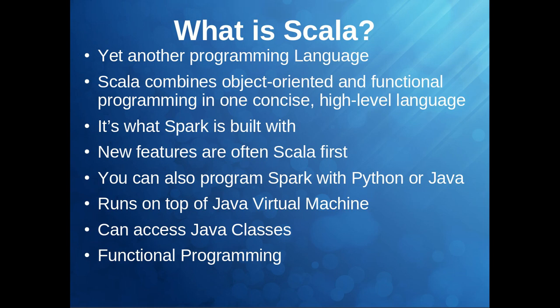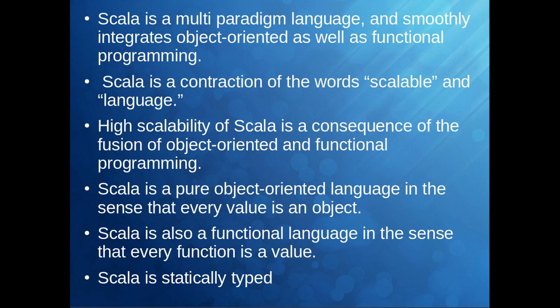Spark is built on Scala. If there are a lot of new features coming in Spark, it's always Scala-first. We can also work with Spark using Python or Java, but Scala is very popular because it's very fast compared to those languages. It can access Java classes, smoothly integrates object-oriented as well as functional programming, and is highly scalable. Scala is a pure object-oriented language in the sense that every value is an object, and also a functional language in the sense that every function is a value — meaning you can pass a function as a value or as a parameter.